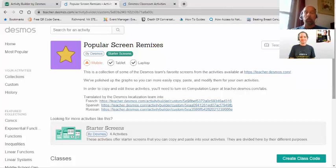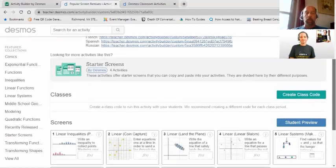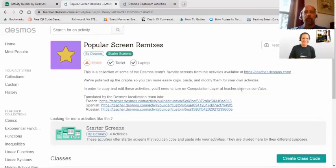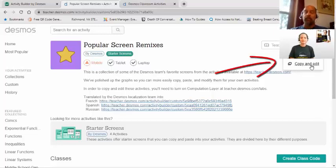I've already got that one open because that's one of my favorites. Popular remixes has some of the more frequently used screens that teachers tend to grab when they start an activity. In order to do that, all you have to do is click up here on the dots and hit copy and edit. Now, if this is not highlightable, it's grayed out, all you have to do is go to teacher.desmos.com slash labs. You have to turn on what's called your computation layer. Once you do that, you pop back over here, hit a refresh, and it'll show up. Then you just hit copy and edit.